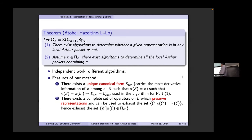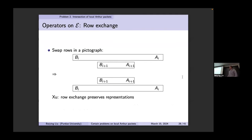There is a complete set of operators, each permuting representations: from datum e, you apply a sequence of operators, keep applying them, and you run through all data giving the same π. This can be used to exhaust the set — all data giving the same π. Each datum gives a packet, so you obtain all packets containing the same π. The first operator is the row exchange introduced by Xu: in the pictograph you just switch rows, and this preserves representations.